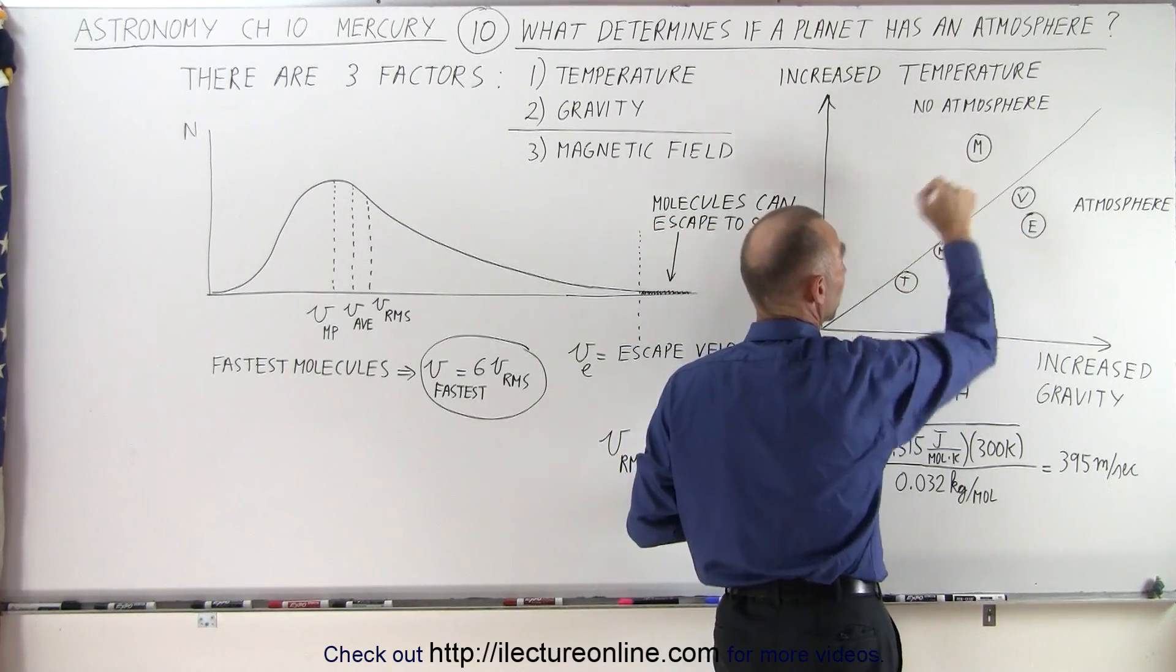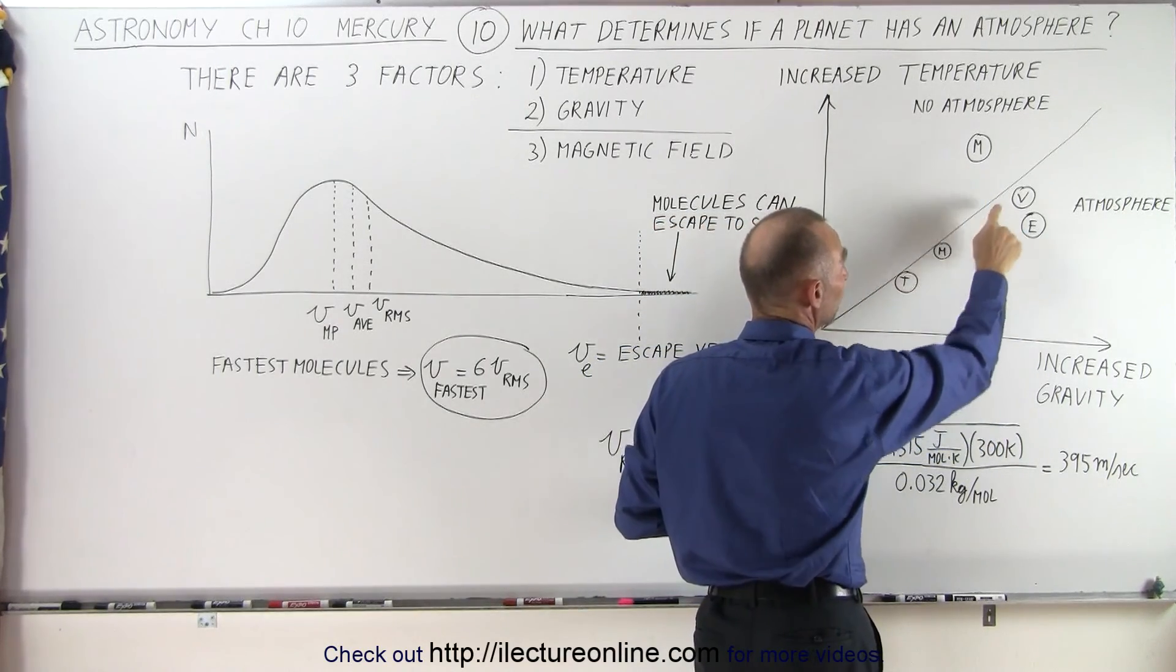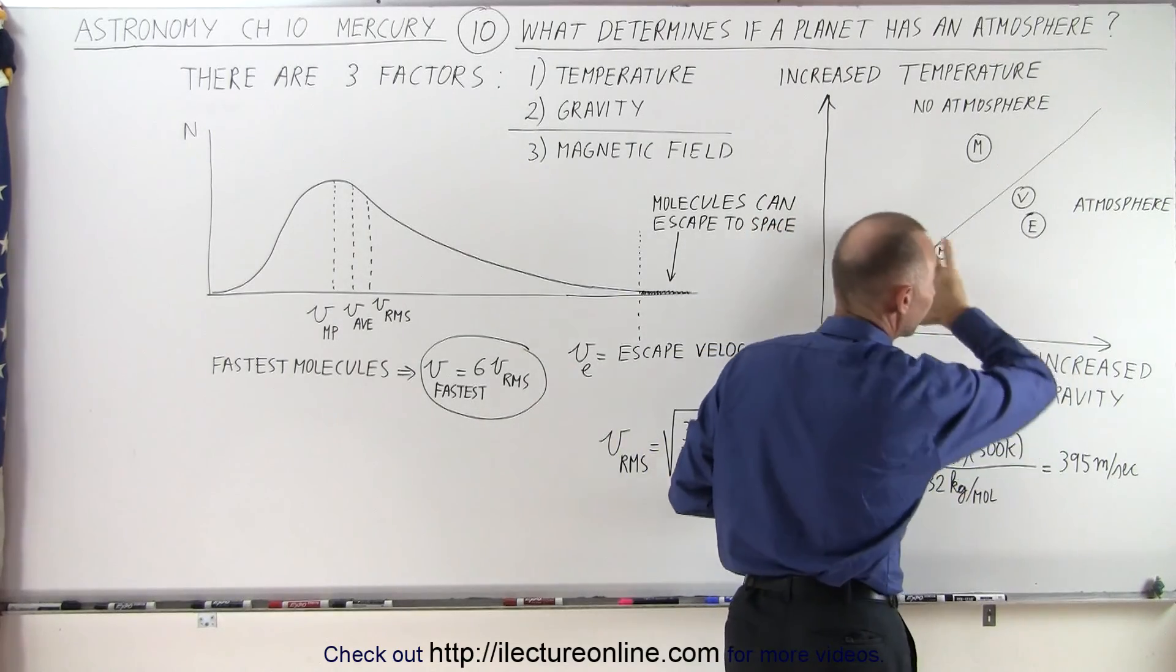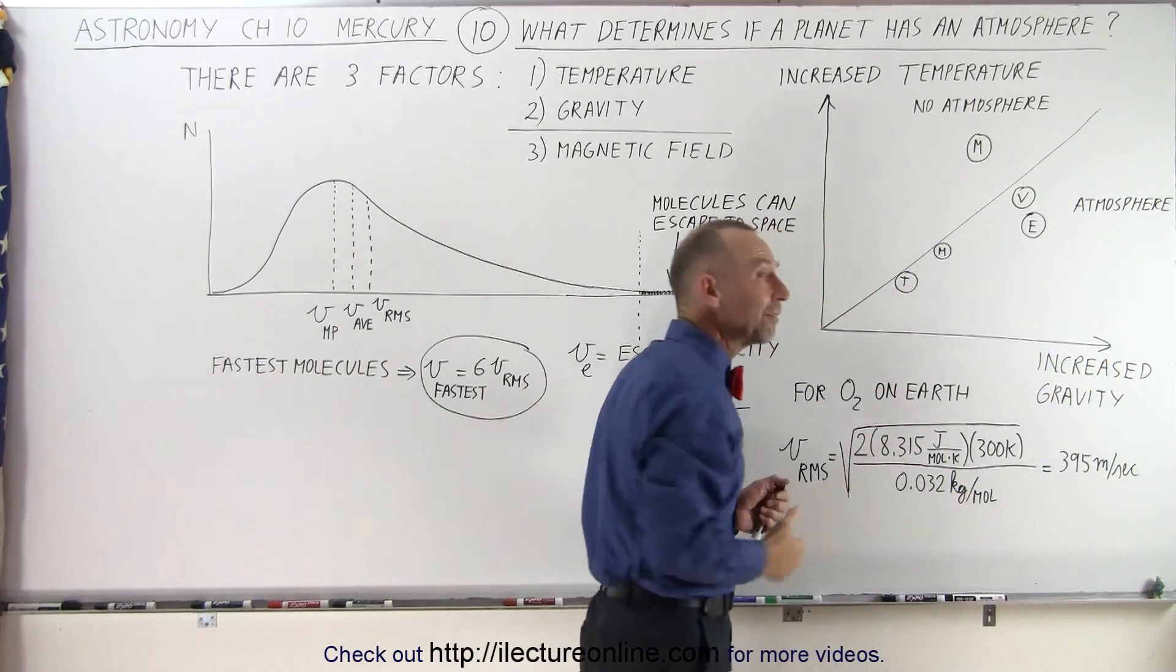Earth, Venus, Mars, and Mercury, notice that Mars, Venus, and Earth have a strong enough gravity, they're far enough to the right for them to have an atmosphere.